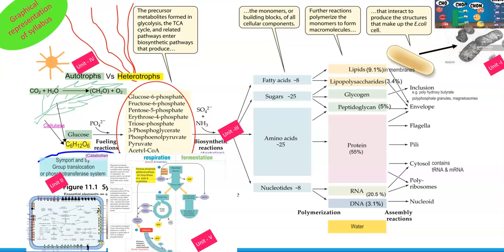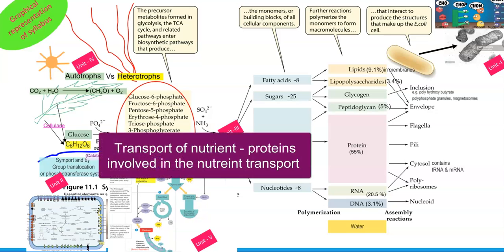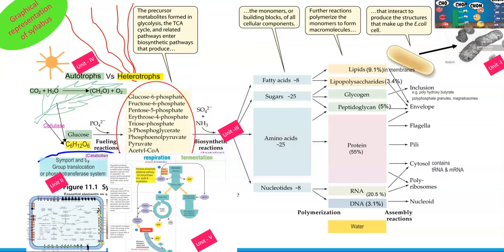In Unit 2, the focus is specifically on the various kinds of transport systems available in the microbial cell, especially in the cell membrane. Different kinds of nutrient transport systems aid in transporting nutrients like carbon, oxygen, nitrogen, and sulfur into the cell system.